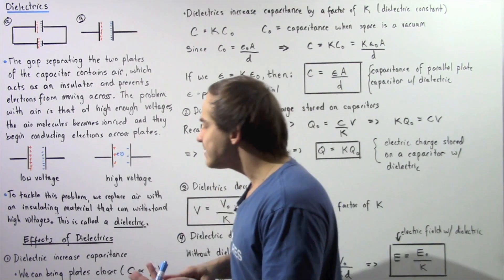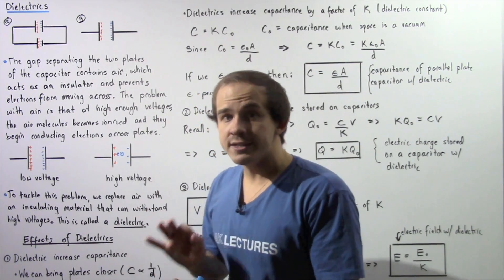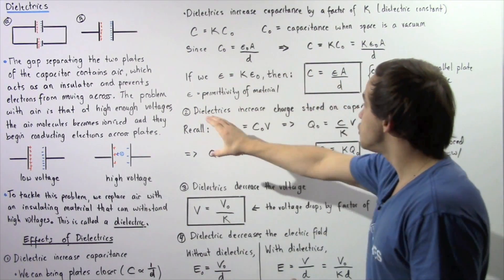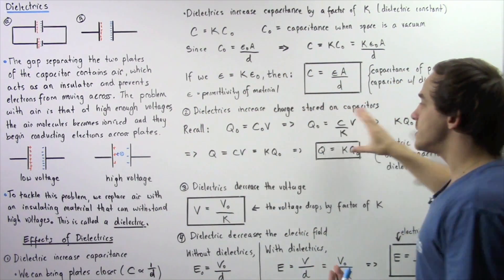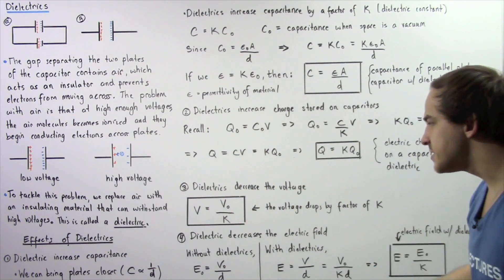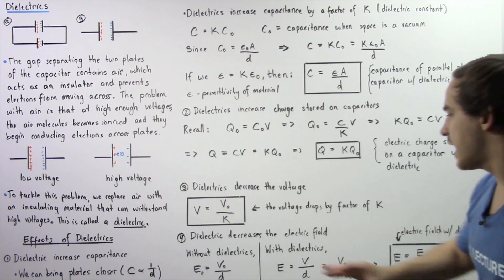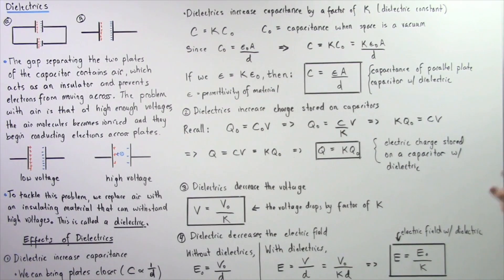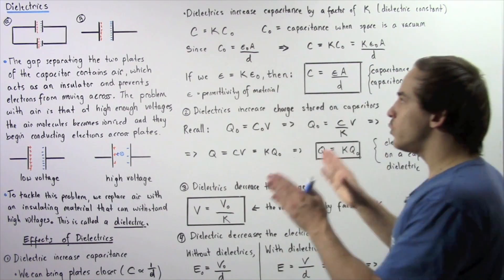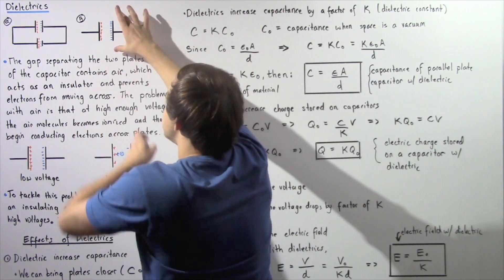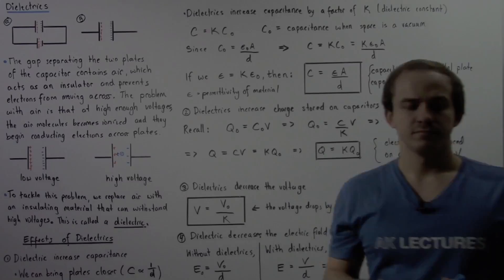To summarize all four effects of a dielectric on a parallel plate capacitor: capacitance increases by a factor of K, charge increases by a factor of K, voltage decreases by a factor of K, and the electric field between the two parallel plates also decreases by a factor of K.